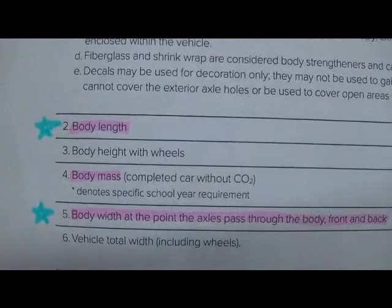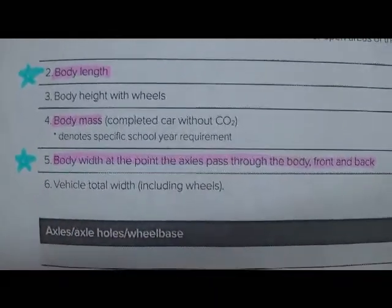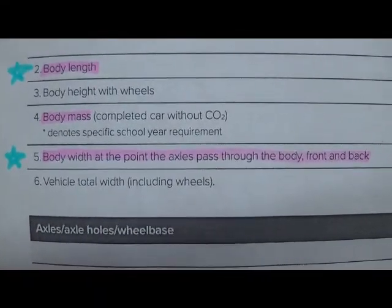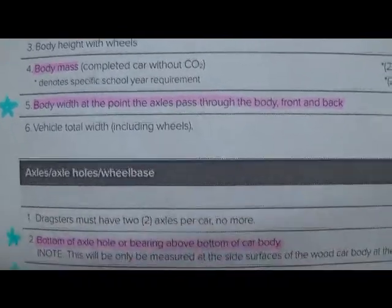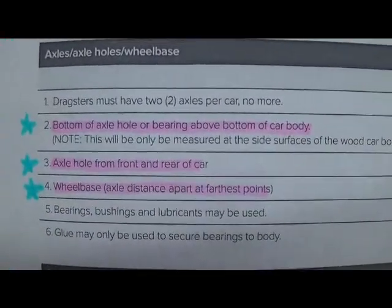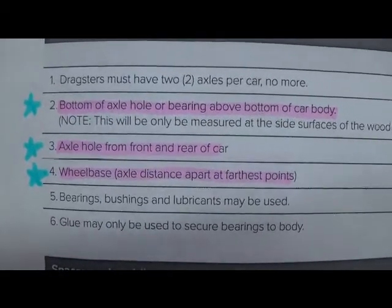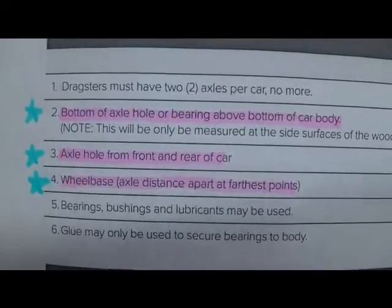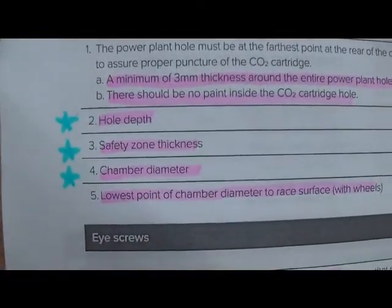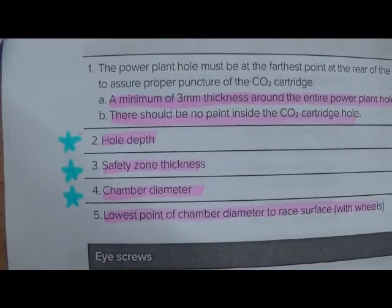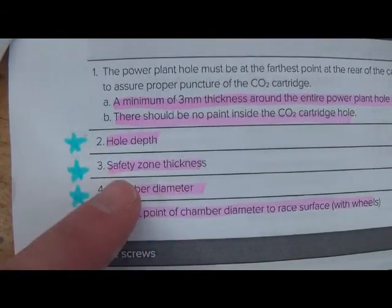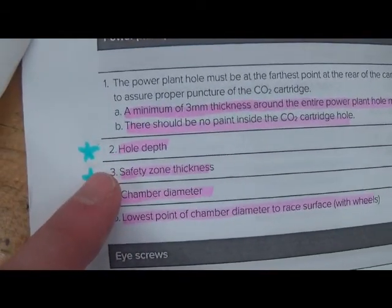Things I'll be looking for in the drawing is body length, the body width at the point the axles pass through the body front and back, the bottom of the axle hole or bearing above the bottom of the car, the axle hole from the front and rear of the car, the wheel base, the hole depth, and the chamber diameter. I'll also be checking safety zone, although I'm not going to make you dimension that.